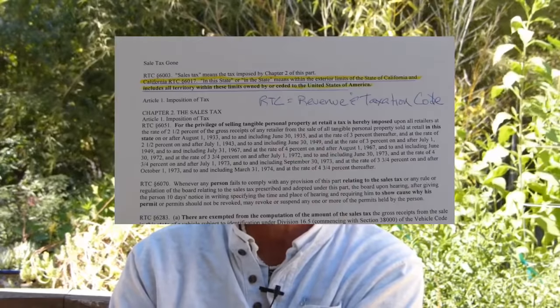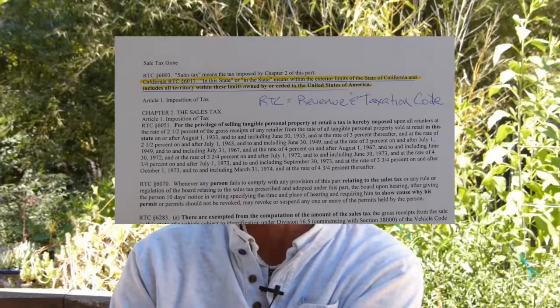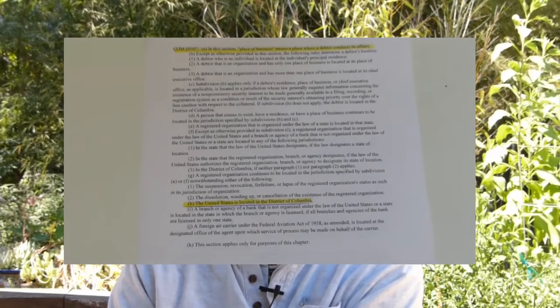I returned my license plates and registration with an explanation based on California vehicle code and numerous U.S. Supreme Court, California Supreme Court, and appellate court cases that clearly indicated the only people required to have the license were those operating in commerce — defined as the transportation of passengers or property for hire or compensation within this state — which was defined as the District of Columbia or properties ceded to the United States. California commercial code and UCC 9307(H) clearly defines the United States as being located in the District of Columbia.